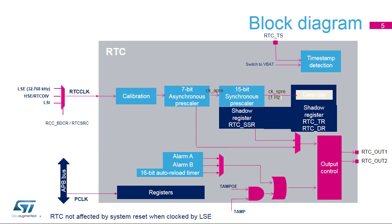The RTC clock can use either the High Speed External Oscillator, or HSE, divided by a programmable factor from 2 to 63, the Low Speed External Oscillator, or LSE, or the Low Speed Internal Oscillator, or LSI. To be functional in stop or standby mode, the RTC clock must use the LSE or LSI. To be functional in VBAT mode, the RTC clock must use the LSE.